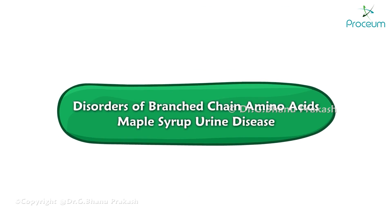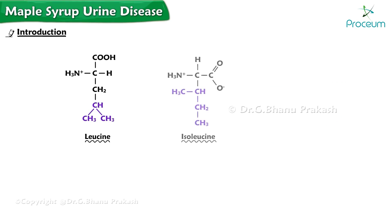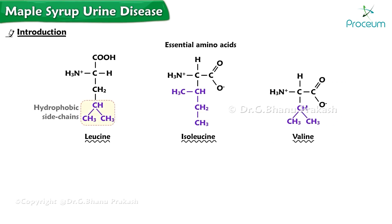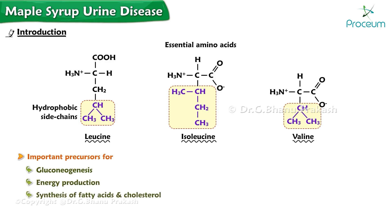Disorders of Branch-Chain Amino Acids: Maple Syrup Urine Disease — Introduction. The branch-chain amino acids, leucine, isoleucine, and valine, are essential amino acids with hydrophobic sidechains and are important precursors for gluconeogenesis, energy production, and synthesis of fatty acids and cholesterol.